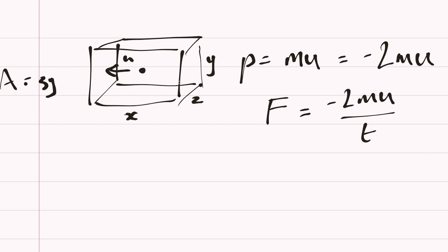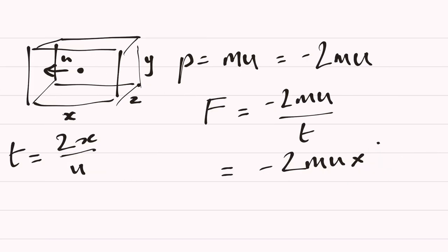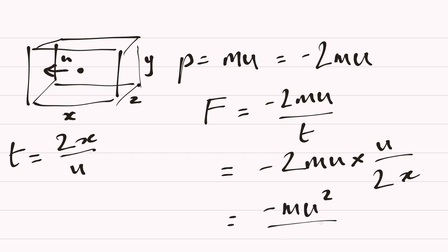The particle shuttles between the left wall and the right wall in the x dimension, doing collisions in time t. The time equals distance divided by speed. It's going to hit this wall just once in time 2x over u. Substituting that into our force equation gives minus 2mu times u over 2x, which is minus mu² over x.